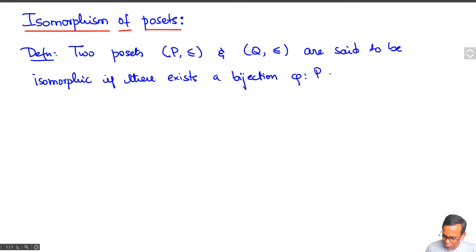Phi from P to Q, a one-to-one onto function that preserves the partial order, which means that x is less than or equal to y in P.